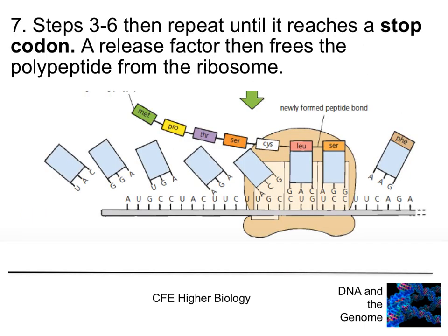This process is repeated again and again until a stop codon is reached, and then a release factor releases the polypeptide or protein from the ribosome. So this is our polypeptide chain that's been formed, with the peptide bonds between amino acids — and this is our protein.